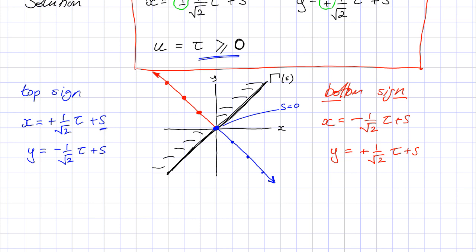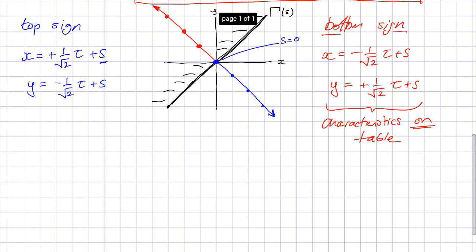And of course, that lies on our table, so that is the solution that I want. These characteristics, these guys are on the table, so those are the ones I want. So we would pick those, and now our solution would be x equals minus 1 over root 2 tau plus s, y equals plus 1 over root 2 tau plus s, and u equals tau greater than or equal to zero.